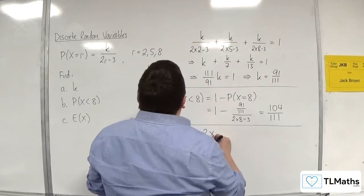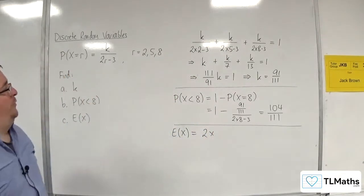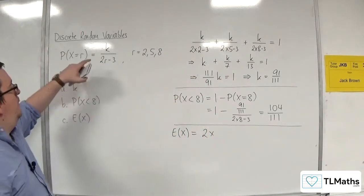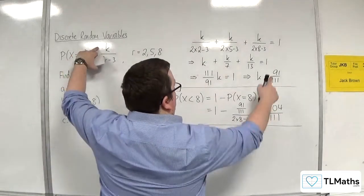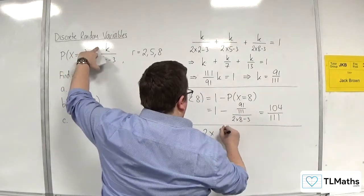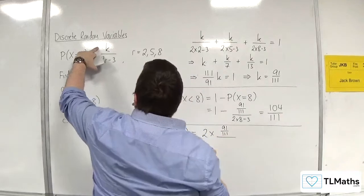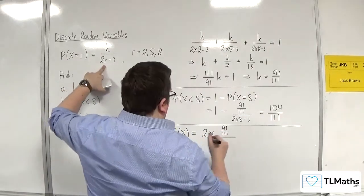So we're going to have 2 times the probability of x being equal to 2. So that will be 91 over 111, over 2 times 2 take away 3.